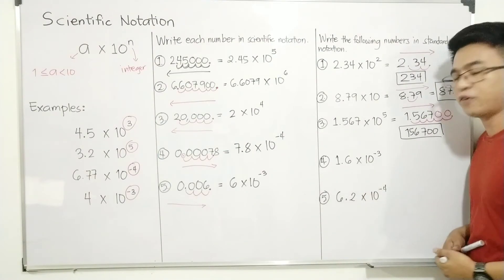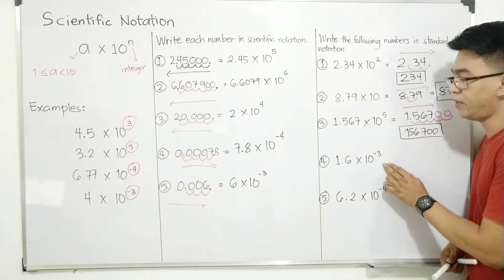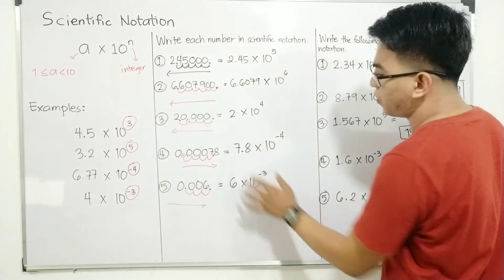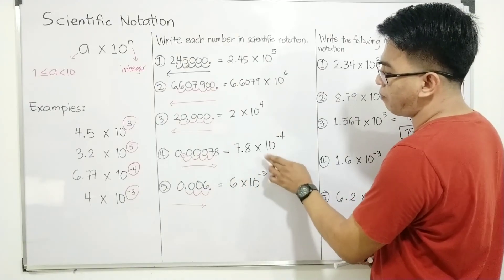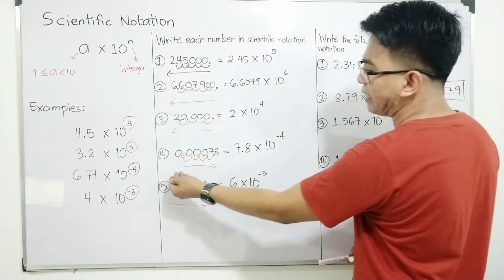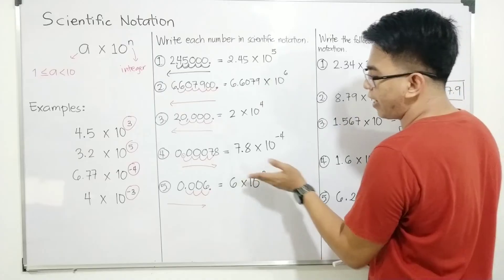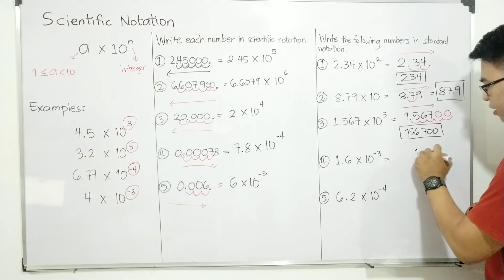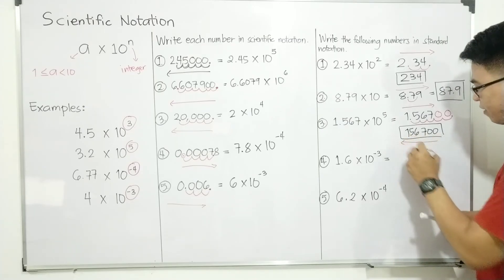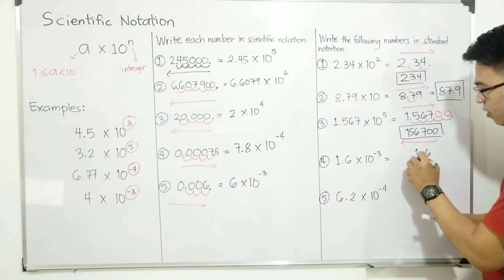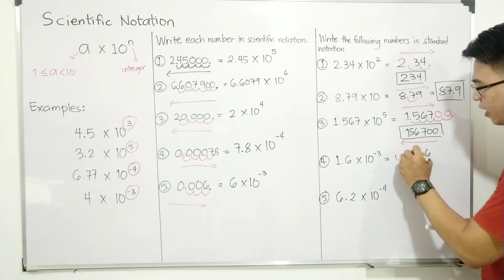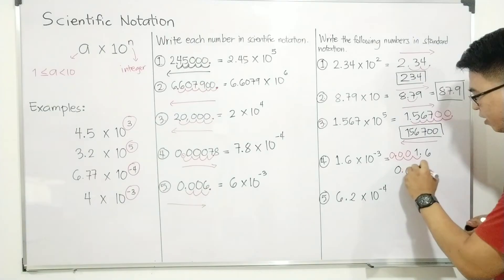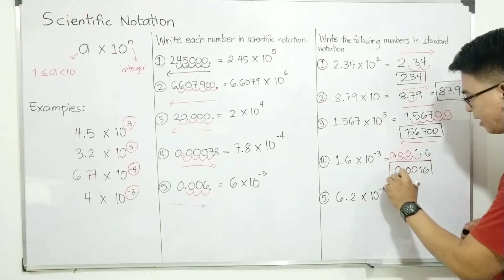For item number 4, we are given a negative exponent — and if the exponent is negative, your answer is a very small number. We have 7.8 times 10 raised to negative 4. Since the exponent is negative, our movement is from right to left. We move 4 units to the left from the decimal, placing zeros: 1, 2, 3, 4. The equivalent is 0.00078.